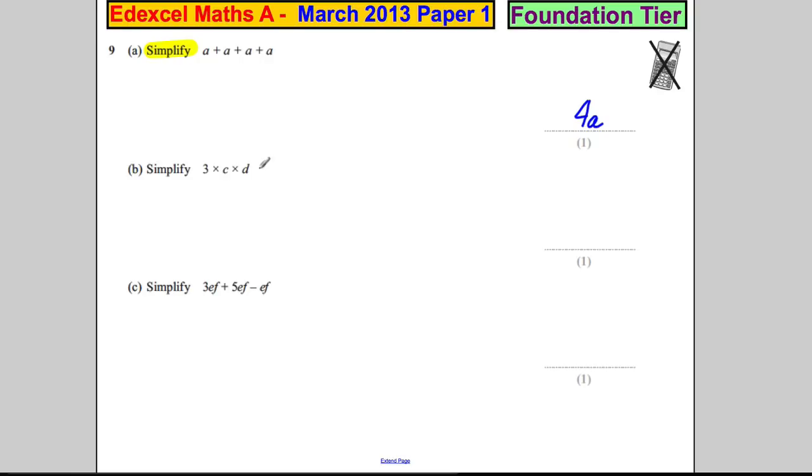Simplify 3 multiplied by C multiplied by D. Well, probably the easiest way to think of it is C multiplied by D - a mathematician would just write that as CD, they don't have the multiply sign there. And 3 multiplied by this would just be 3CD. So 3CD is the way a mathematician writes it, they just take away the multiply sign with algebra.